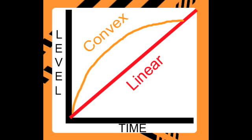Your tweaking can pay off, as the Minimoog has 3 oscillators, while the Virus TI can have up to 2000 oscillators at once. The 2000 oscillators, tons of waveforms, effects, routing matrix, and other programming capabilities of the Virus make it an incredibly powerful instrument.